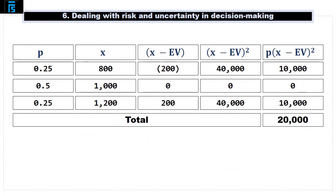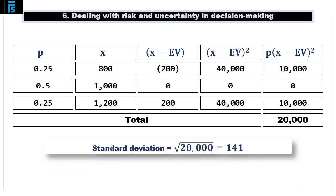The standard deviation can be calculated by building up a table as follows. The standard deviation would be the square root of 20,000, which is 141.